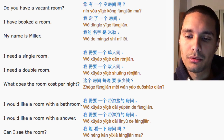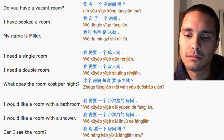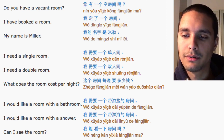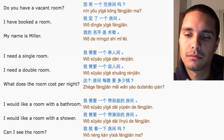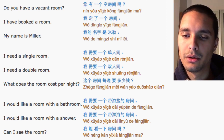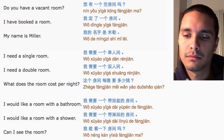I would like a room with the bathroom. 我需要一个带浴盆的房间 I would like a room with the shower. 我需要一个带淋浴的房间